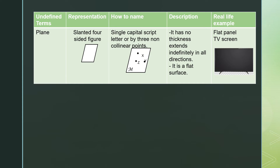The last undefined term is the plane. To represent a plane, we use a slanted four-sided figure. To name a plane, we can use a single capital script letter — for example, plane M, where script means cursive lettering. We can also name the plane using three non-collinear points, meaning points that do not lie on the same line. For example, plane XYZ.